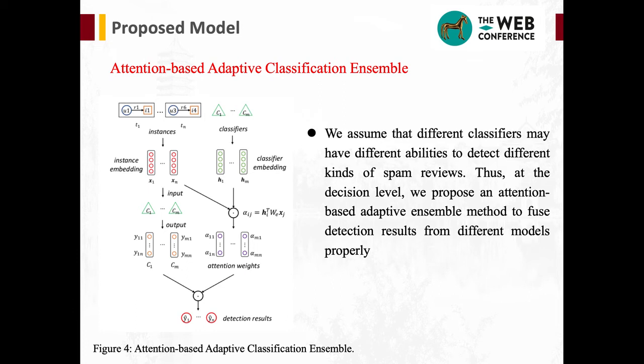At the decision level, we assume that different classifiers may have different abilities to detect different kinds of spam reviews. Thus, we propose an attention-based adaptive ensemble model to fuse detection results from different models properly. First, base classifiers are embedded into the latent space. Then we compute the attention weight that describes the predictive ability of each classifier with respect to the instance, and the ensemble output is generated by calculating the weighted sum of all base classifiers' outputs.